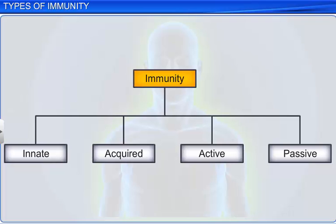Therefore, immunity can be innate or acquired. It can also be either active, if induced by an infection or a microbial attack, or passive, if provided with ready-made antibodies.